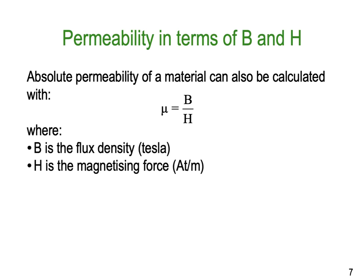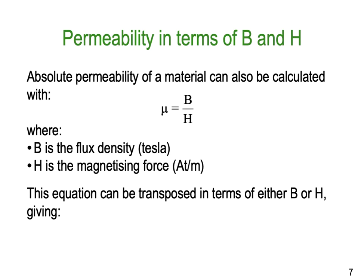Where B is the flux density in Teslas and H is the magnetizing force — remember, amp turns per metre. H is simply the current multiplied by the number of turns divided by the distance in metres; that's what amp turns per metre means. If you want a hint and you don't know what the formula is, look at the units. This equation can be transposed both in terms of B or H, giving us B equals absolute permeability times H, or H equals B divided by absolute permeability of our particular material.